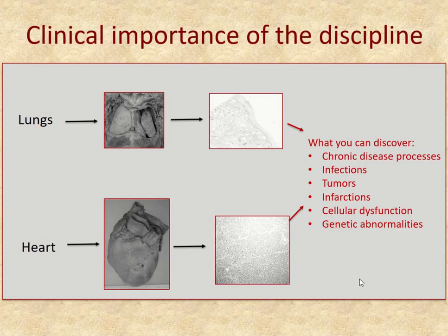So why is histology important? You really have to see the tissue up close with a microscope if you want to look for clinical situations like disease, bacteria or viruses indicating infection, tumors, cancer, or infarction — meaning a blockage in the tissue's blood supply. You can also see changes in cells that indicate whether they're working properly or are dysfunctional, and sometimes you can see evidence of genetic abnormalities. These are all reasons why you might want to look at an organ's histology.